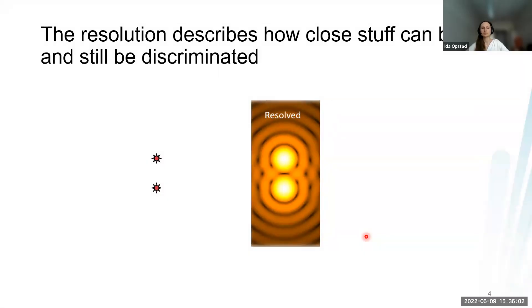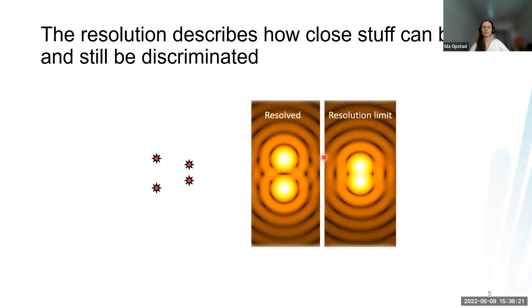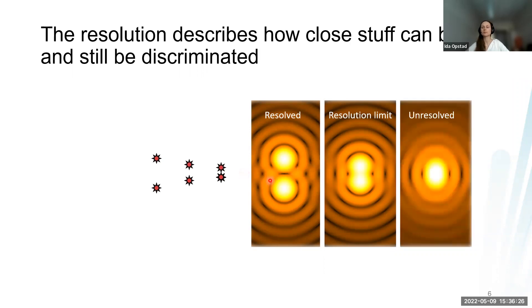Resolution is just how closely stuff can be and still be discriminated. If we have some fine structures in the sample, they will be blurred by the microscope and look like larger blobs. When they are resolved, you can see them as different. When they are at the resolution limit and beyond, they will all mix together in the image and you will not be able to tell the underlying structure.